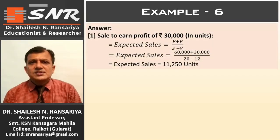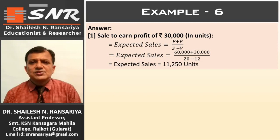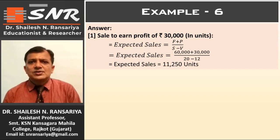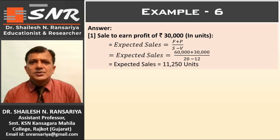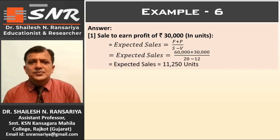First answer. Expected Sales = (F + P) / (S − V). Fixed expenses ₹60,000 + profit ₹30,000, divided by S − V = 20 − 12 = 8. Expected sales = 90,000 / 8 = 11,250 units. It means if the company wants to earn a profit of ₹30,000, it has to make sales of 11,250 units.